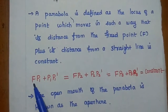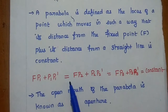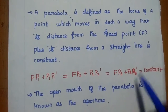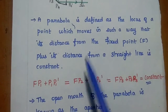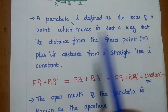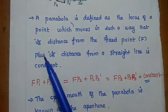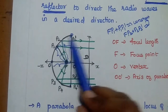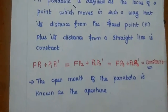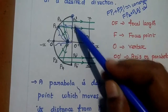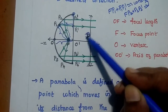The design can be given like this: FP1 plus P1P1 dash equals FP2 plus P2P2 dash, and so on — this value should be a constant one. A parabola is defined as the locus of a point which moves in such a way that its distance from the fixed point plus its distance from a straight line is constant from the focus point to the straight line for all points. The open mouth of the parabola is known as the aperture, and D represents the diameter.